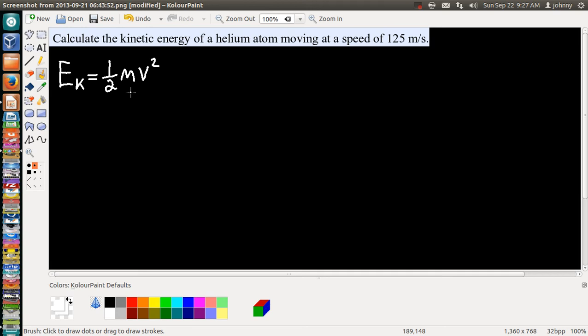There's some things you need to know about this formula. V is velocity, and the units of velocity in physics is meters per second. However, also in physics, the unit used for mass is the kilogram. So we need to make sure that when we do our calculation, we use kilograms for our mass.